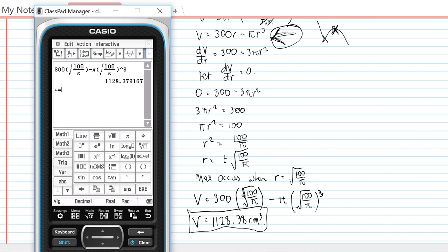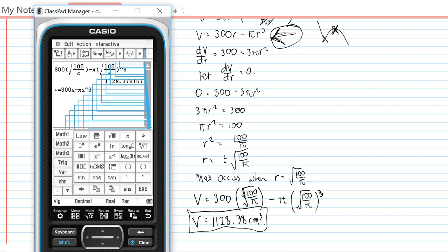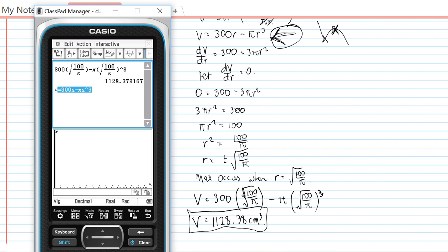So I'll just write y = 300x - πx³ and graph it. So by the way, that's coming from this line right here.